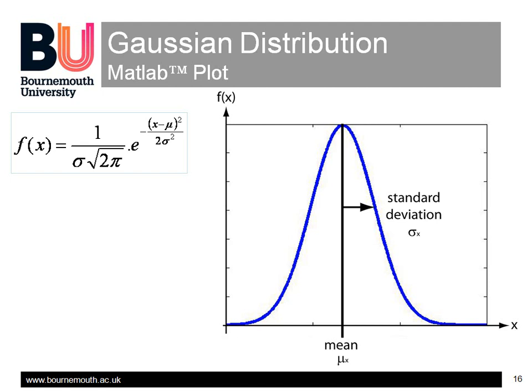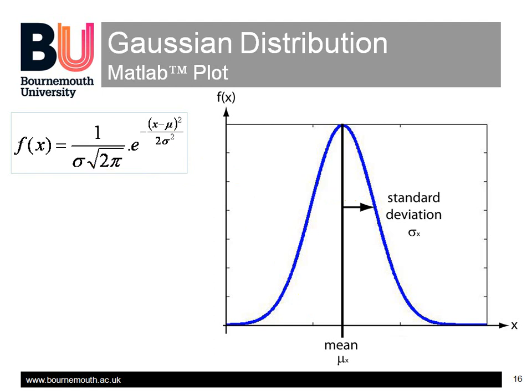This is the formula to generate the bell curve. It looks a bit nasty, but gazing intently at it shows that it is a continuous exponential function of x with only two parameters: the mean value, mu, and the spread of values around the mean, the standard deviation, sigma. It's absolutely convenient for us to assume the mean values of our noise signals are zero, so the only parameter left is sigma.